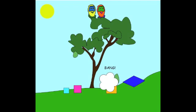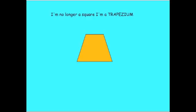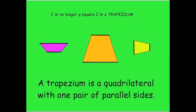I'm gonna check my size, another square, I'm a trapezium. A trapezium is a quadrilateral that has only one pair of parallel sides.